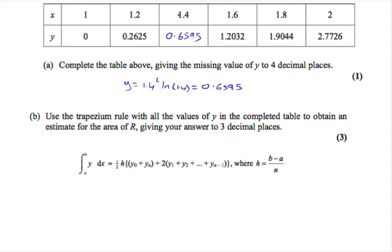So a is 1 and b is 2. n is the number of strips that we have split the area into. So if there's six points, then there's going to be five intervals. So to find h, we have two minus one over five, which gives one fifth, which is 0.2. So our h is 0.2.